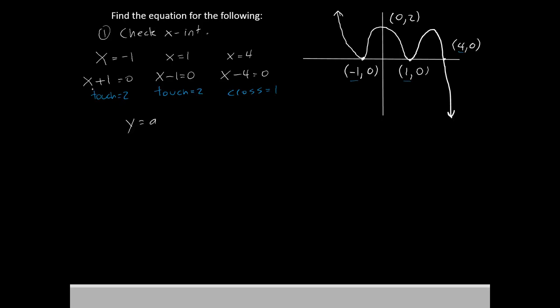Now we'll write down our pieces. Our first piece is going to be x plus 1 raised to the second power times x minus 1 also raised to the second power times x minus 4 raised to the first power. That's going to be the framework for our equation and it's actually almost finished now.